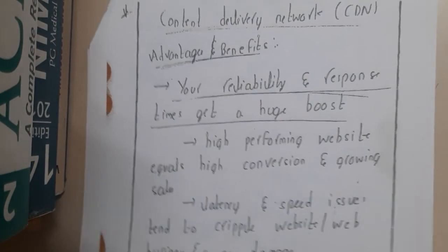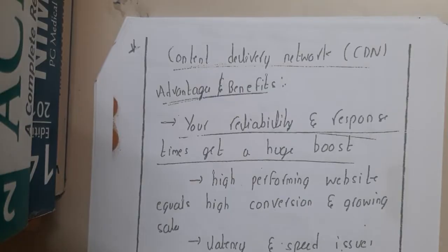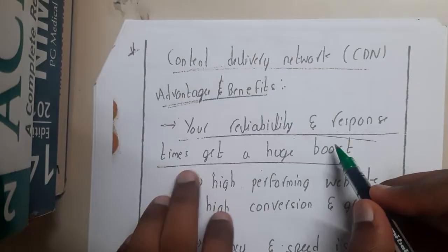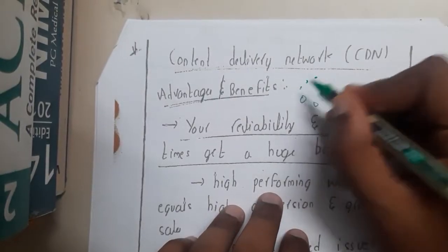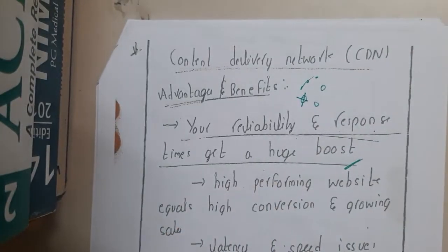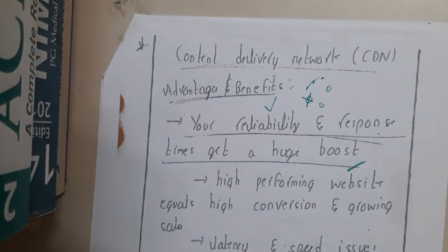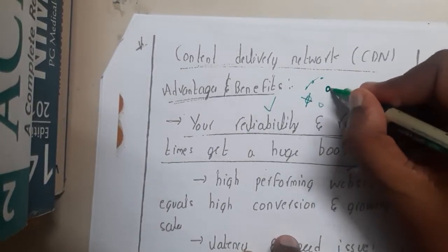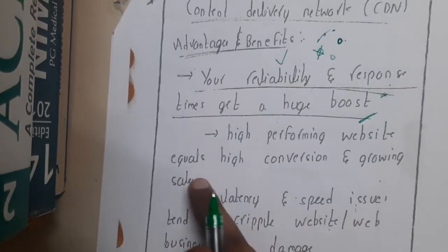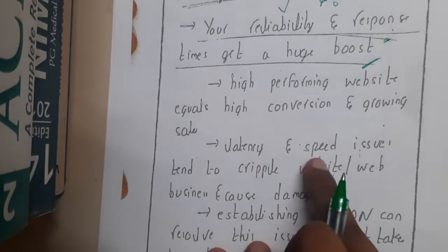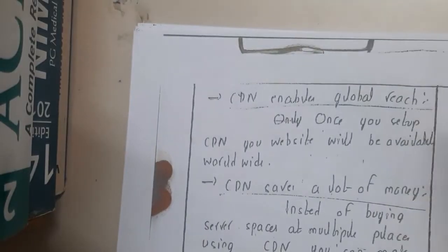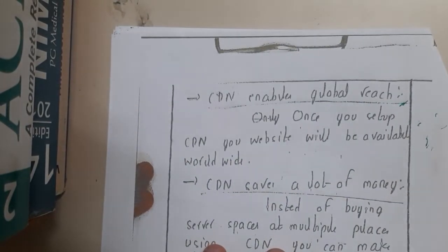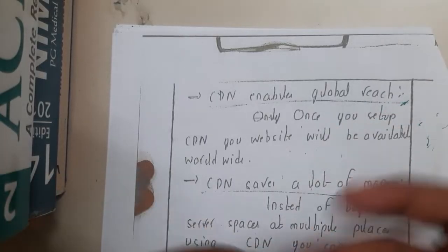Now let us go through some advantages. First, your reliability and response time get a huge boost. If your data is replicated at multiple servers, if one server is down, some other server will respond — so your data is 100% reliable and response time is fast. CDN also enables global reach, so from anywhere around the world you can access it. Once your website is set up for CDN, it's really easy to manage from that point on.